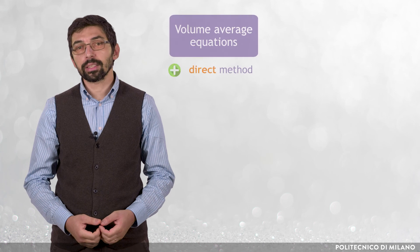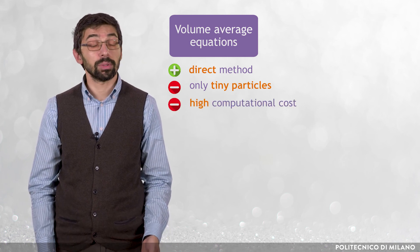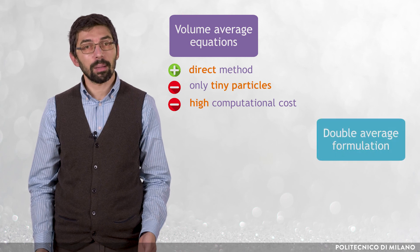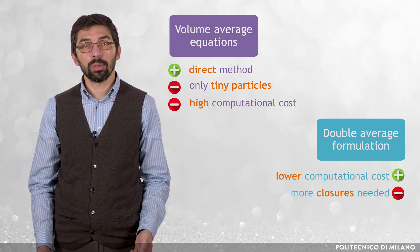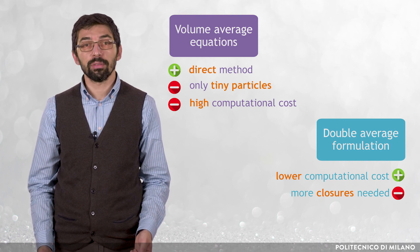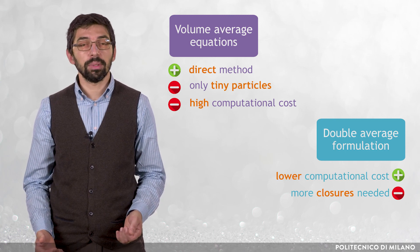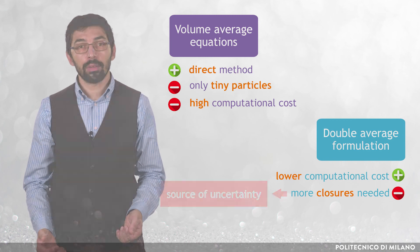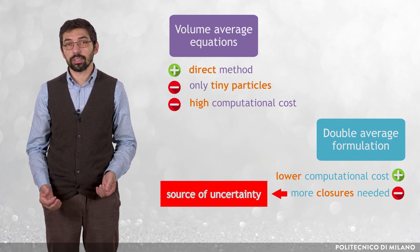In summary, modeling turbulent particle-laden flows with the Eulerian-Eulerian approach is very complicated. On one hand, the direct solution of the volume average equations imposes strict constraints on the size of the particles and requires high computational cost. On the other hand, the double average formulation is computationally more efficient, but it requires introducing further closures to model the additional terms involving the correlations between the fluctuating components. The modeling of these correlations is a complex task and, as a result, these terms are often neglected or estimated using empirical equations with questionable validity, thus introducing uncertainty in the solution. These considerations emphasize the need for further research into these aspects.